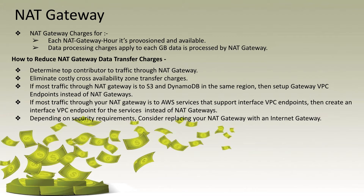Also check if you are paying for cross-availability-zone data transfer. Suppose you have your private subnet in one availability zone and your NAT gateway in a different availability zone — in addition to the NAT charges, you are also paying for cross-AZ data transfer. To eliminate those charges, see if you can place the NAT gateway in the same availability zone as your private instances instead of a different one.